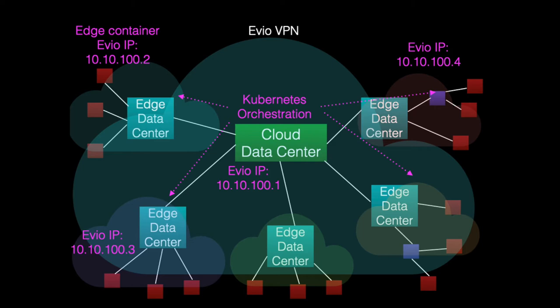Every node in this virtual cluster has a virtual private address on the EVO namespace. Computers across the cluster are able to communicate privately without having to worry about traversing NATs, firewalls, or the dynamic membership of nodes added or removed from the virtual network.